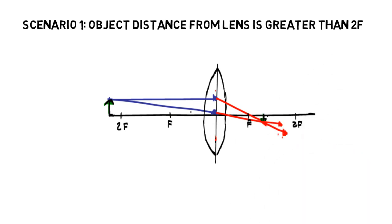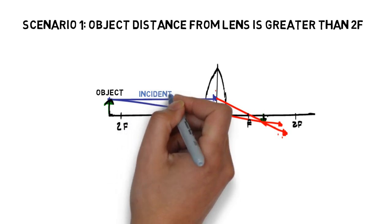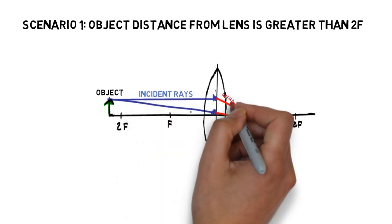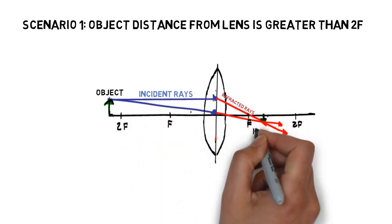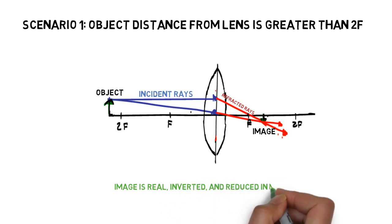Here is a diagram depicting this scenario, with the object, incident rays, refracted rays, and image, all labeled. When the object distance from the lens is greater than 2F, the image is real, inverted, and reduced in magnification.